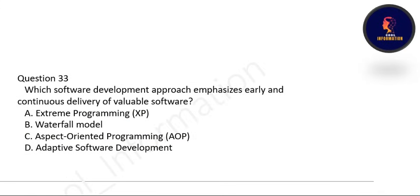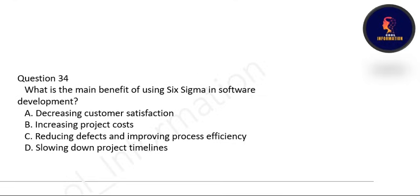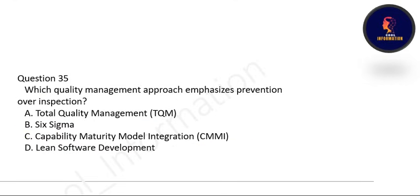Next: which software development approach emphasizes early and continuous delivery of valuable software — Extreme Programming, Waterfall Model, Aspect-Oriented Programming, or Adaptive Software Development? Correct option is A — Extreme Programming. Next: the main benefit of using Six Sigma in software development is to reduce defects and improve process efficiency. Next: which quality management approach emphasizes prevention over inspection? Correct option is A — Total Quality Management, TQM.